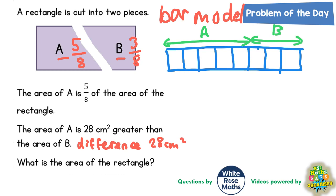Now this is the key here that because area of A is 28 greater than the area of B, that means the difference is 28. But don't forget that the difference between the two areas is also the difference between five-eighths and three-eighths. So the difference between five-eighths and three-eighths is two-eighths. Five-eighths is two-eighths more than three-eighths. So the difference is 28 centimeters squared but it is also the difference between five-eighths and three-eighths which is two-eighths. So what we're saying is that 28 centimeters squared must be worth the same as two-eighths.